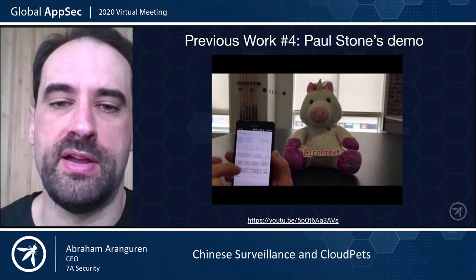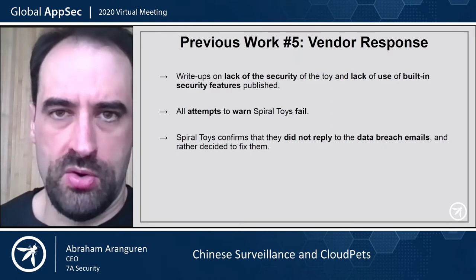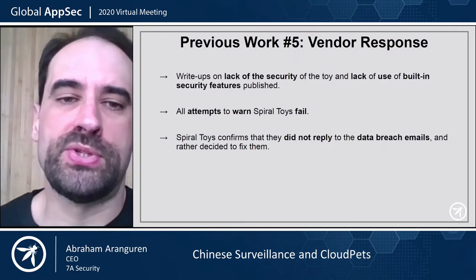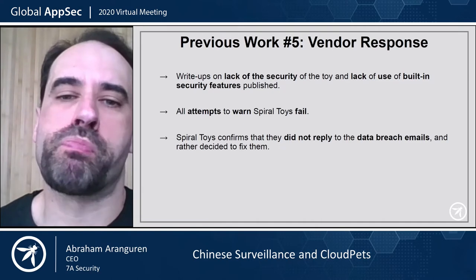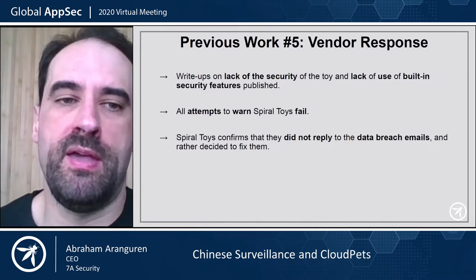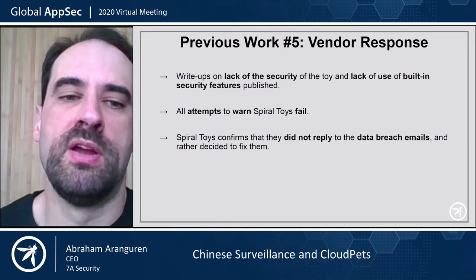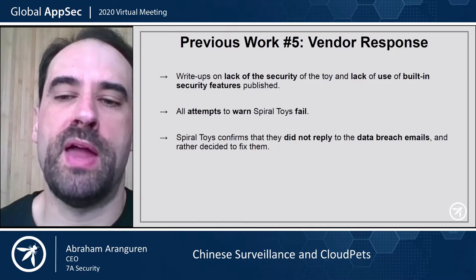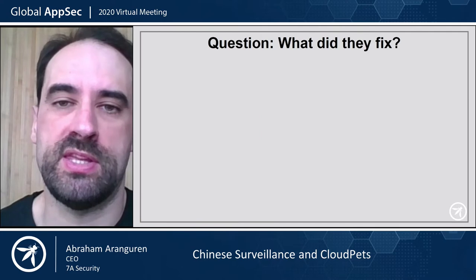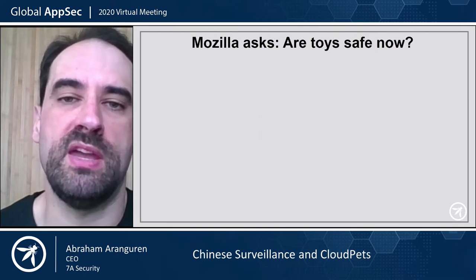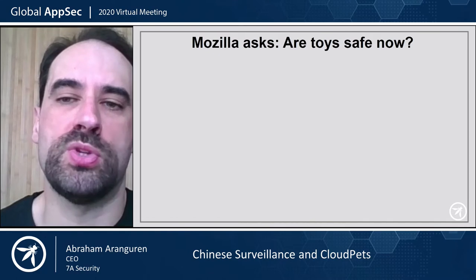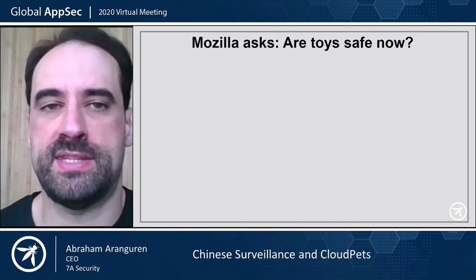You can watch a demo explaining all these weaknesses. After all this, Paul Stone also contacted Spiral Toys, the company behind this. There were multiple write-ups about the lack of security of the toy and the lack of use of built-in security features, but all attempts to warn Spiral Toys failed. The company confirmed they did not reply to the data breach emails. Mozilla, who sponsored an audit, was basically asking: are the toys safe now, because the company claimed to have fixed everything? So let's check — this is where our actual work begins.